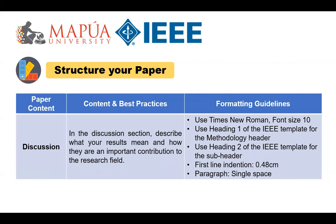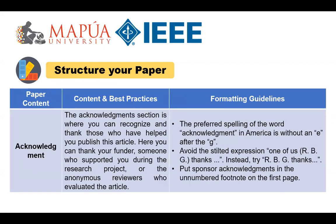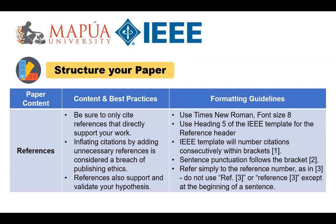Moving on to the discussion: a good discussion section includes analysis of any unexpected findings. There is a 'wow factor' if you show unexpected findings. This paragraph should begin with a description of the unexpected finding, followed by a brief interpretation of why you believe it appeared, and if necessary, its possible significance in relation to the overall study. The acknowledgement section is usually optional but quite common for researchers to mention people who contributed to the completion of the paper. For references, it is important because all scientific and technical research builds upon previous work, and references help give proper credit and attribution to the preceding body of work.